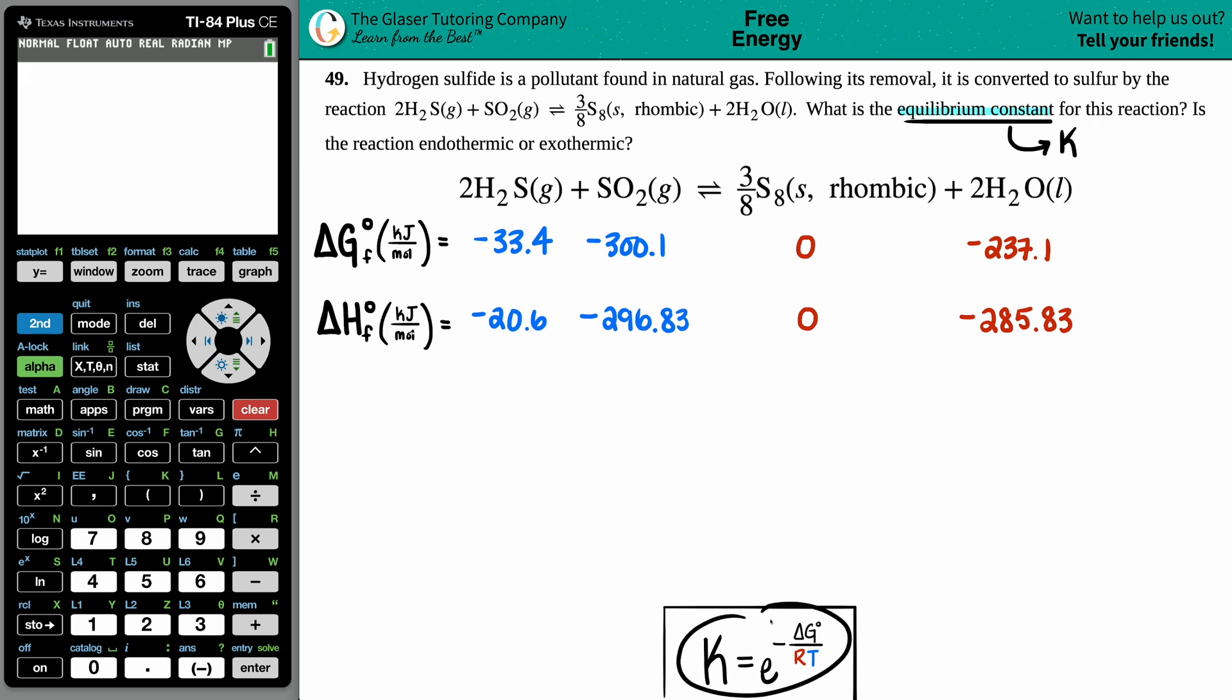The formula we're going to use is equilibrium constant K equals e raised to the negative ΔG divided by RT. The R value they didn't give us, but it's always constant at 8.314. If we use 8.314, the units are joules per mole times kelvin, which gives you a heads up as to what units are allowed for the Gibbs free energy ΔG and the temperature.